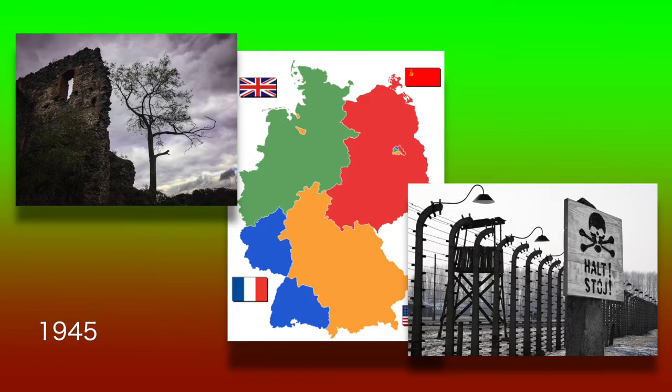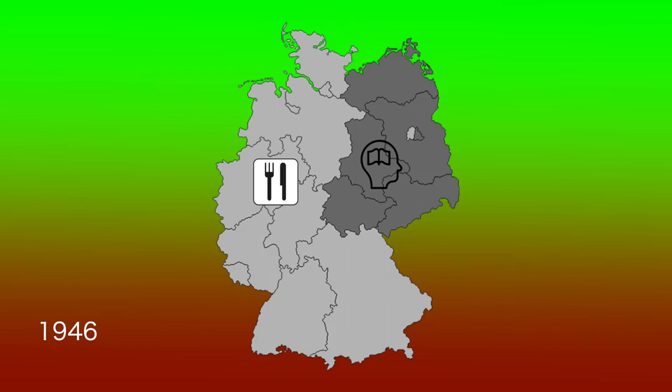A containment of the gigantic flow of refugees going from East to West was in the interest of all allied parties. The Soviets saw qualified specialist staff bleeding away from the Eastern sector, and the Western allies saw a problem in feeding and medically treating the continuous incoming flow of refugees and finding a place to live for them.